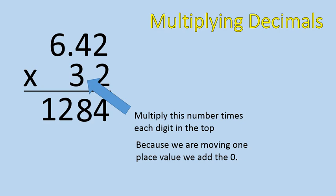All right, now I'm going to take the second number, and I'm going to multiply it times every number in the top. However, because I'm moving over one place value, I have to add that 0 there, same as before. So now I'm going to multiply.